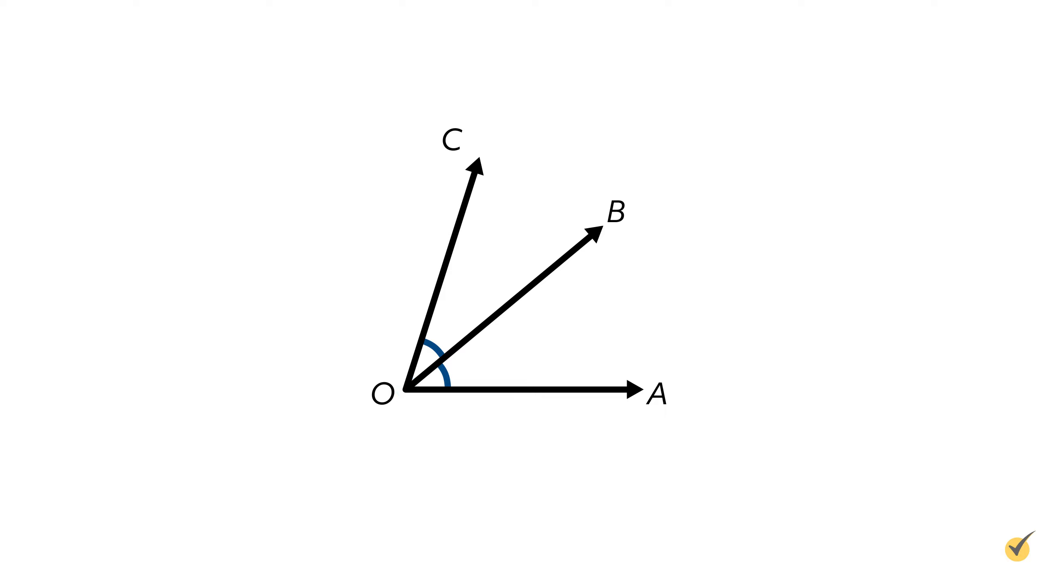Second, the two angles must share one common side that lies between them. In this case, that common side is the ray from O to B.